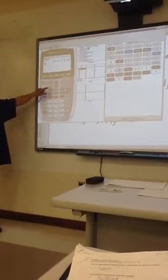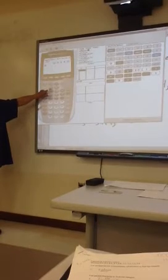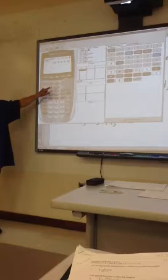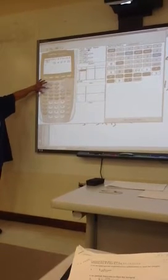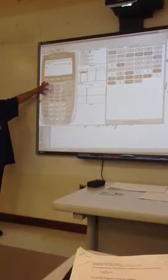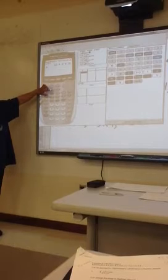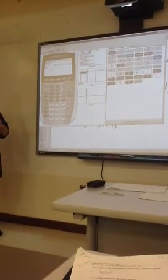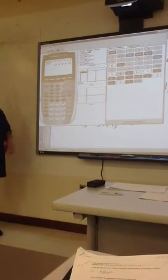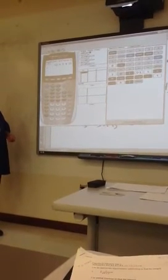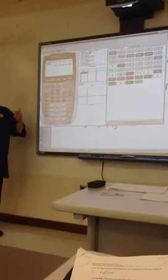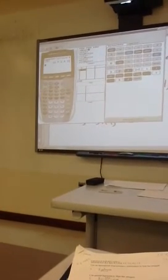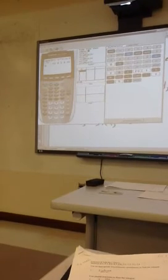Once you go into sequence mode, it does it itself. See that that's the fourth letter over. So X is for functions, T is for parametric, theta is for polar, and then N is for the sequences. Polar, thank you. Did you find it? Yeah.